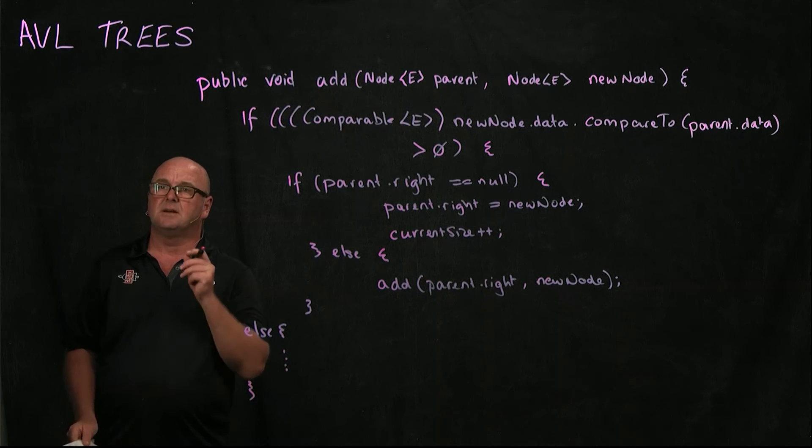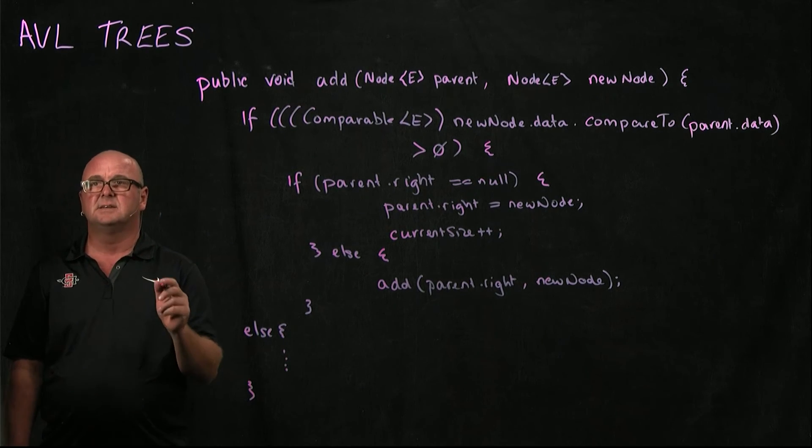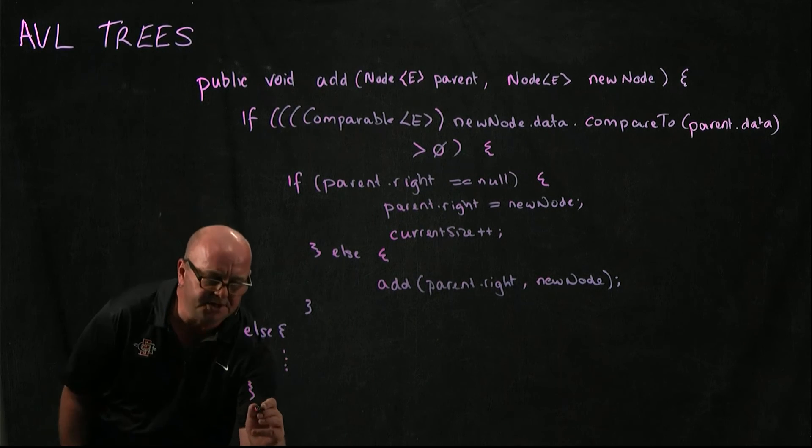Okay, we've added to our tree. And what's the rule about AVL trees? Remember that the difference in height can't be more than one. After we add, now we need to call check balance.